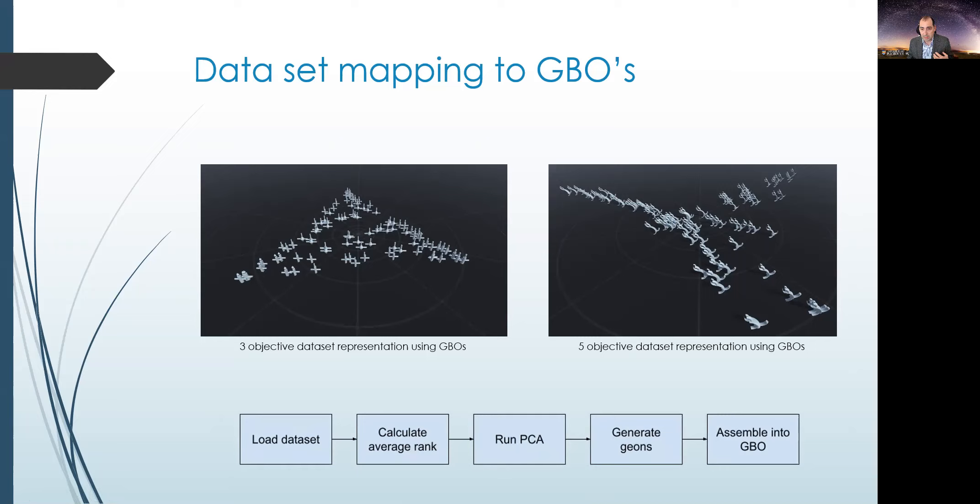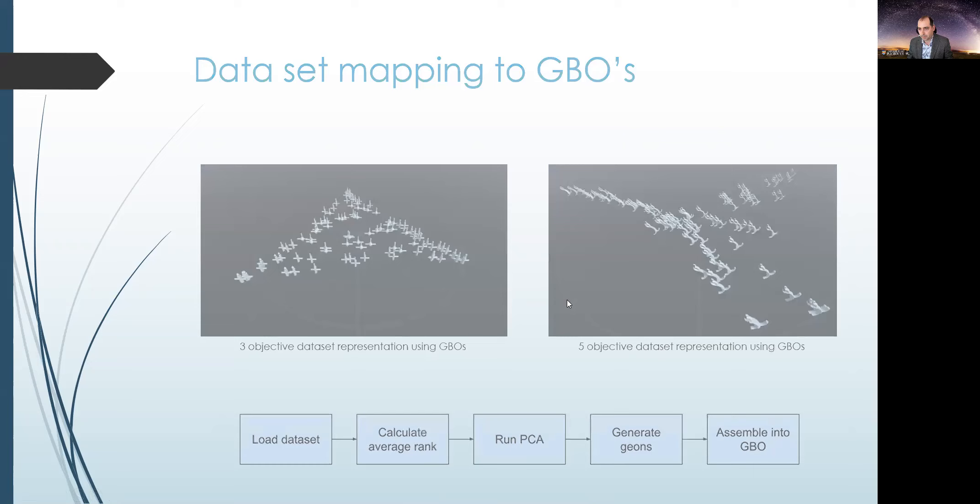In terms of the overall process, how this works, basically we start with loading the dataset in here. And what we do, we calculate the average rank for each solution, and then we run the PCA for each solution in order to generate a set of 2D coordinates for placement in the virtual environment. And then we generate the Geons themselves to represent the objective score, and then we assemble these into the visual object, which is the GBOs. And then those GBOs, all hundred of them in this case, are being displayed in the virtual environment.